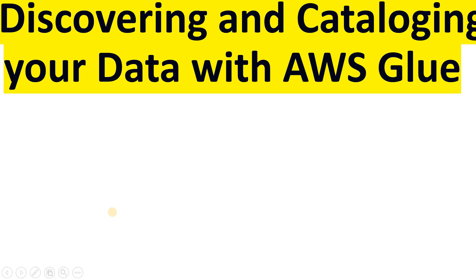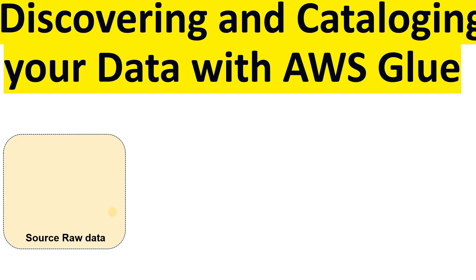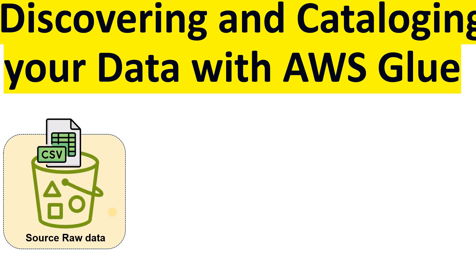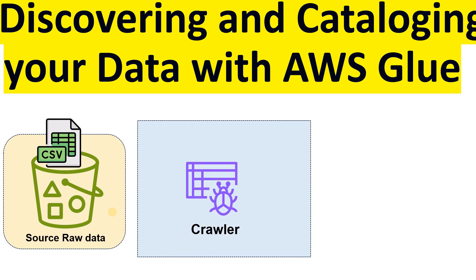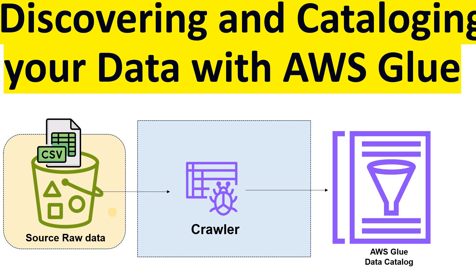In this video I will show you how to discover and catalog your data using AWS Glue. We will have our source raw data in an Amazon S3 bucket containing a huge list of CSV files. We will use the AWS Glue Crawler service to discover the data from the S3 bucket and load it into the AWS Glue Data Catalog. This is a hands-on experience showing how to transform your data by discovering it from the source and loading it into the Glue Data Catalog table.